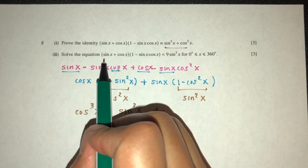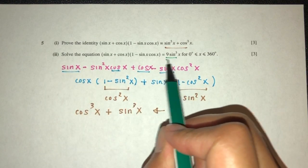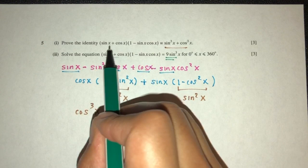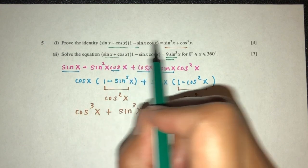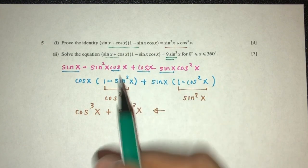Now for part 2, we have to solve this equation equal to this. Again, this is the same thing as this. We understand that this is equal to this so we can take this and put this here.